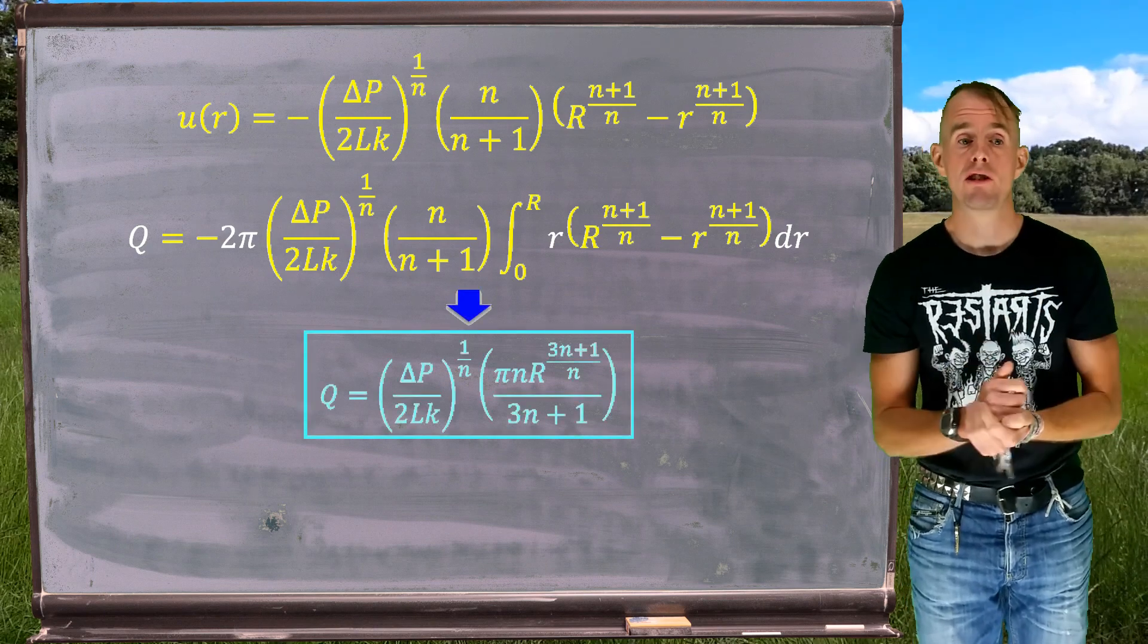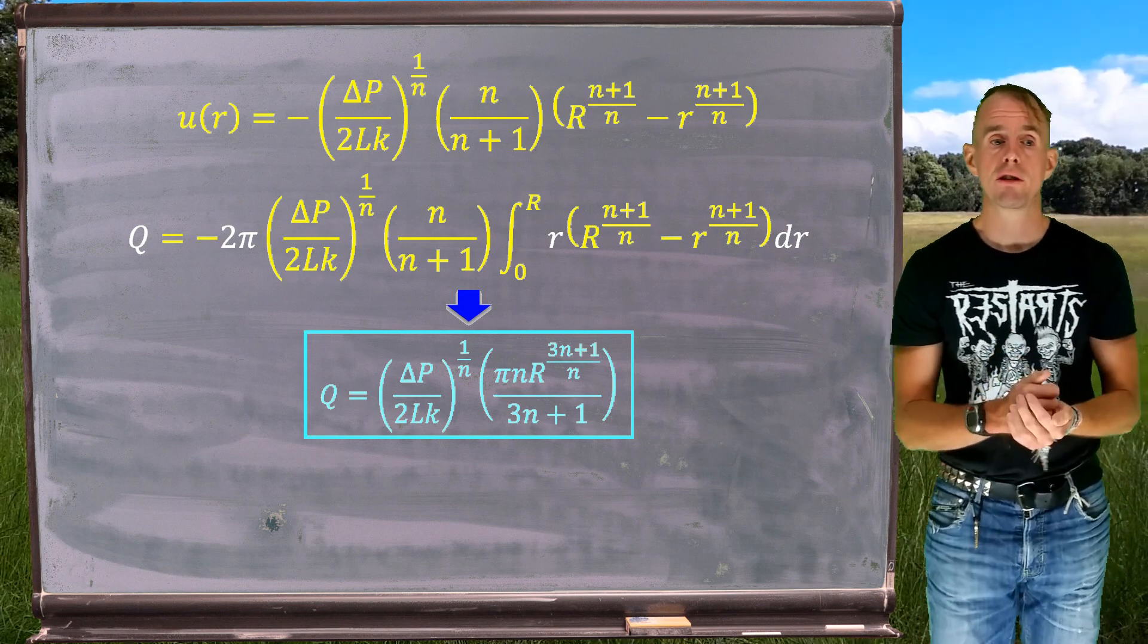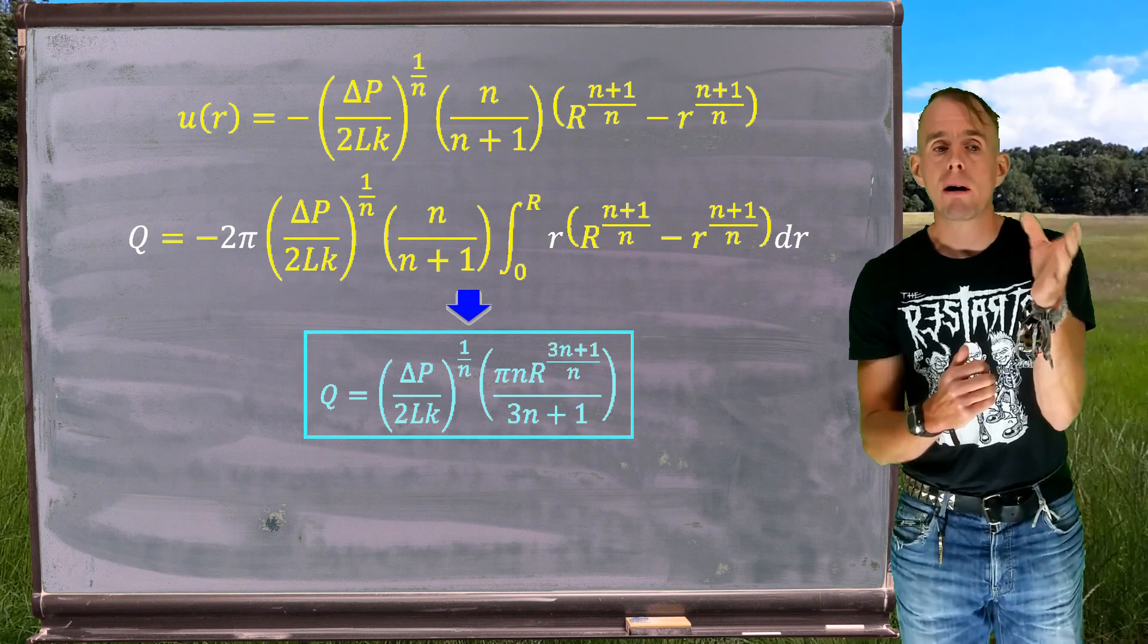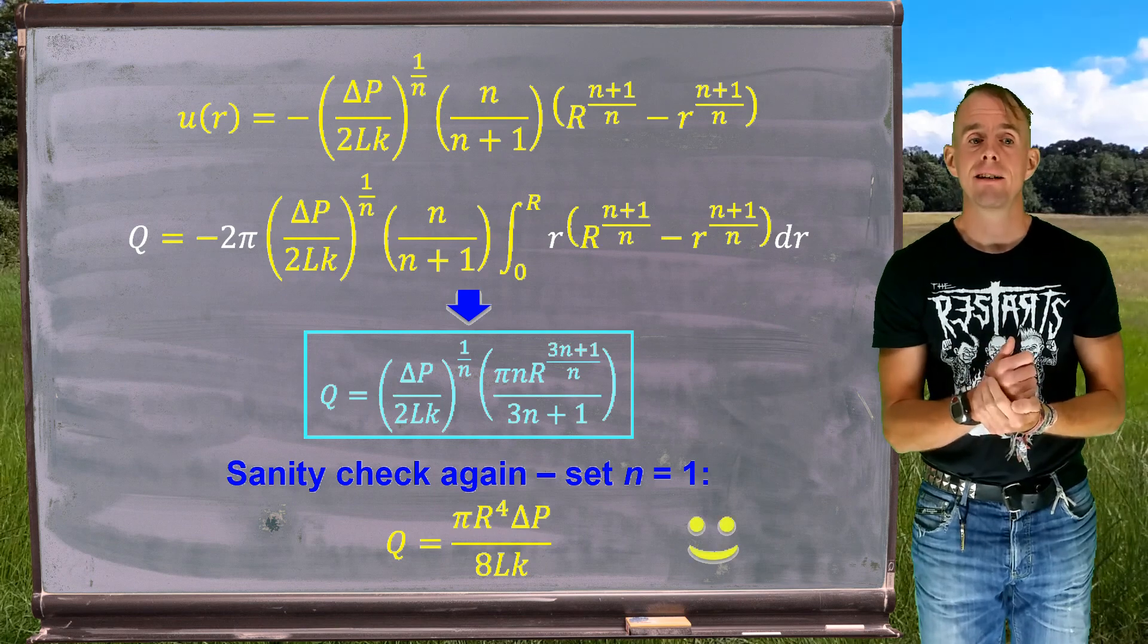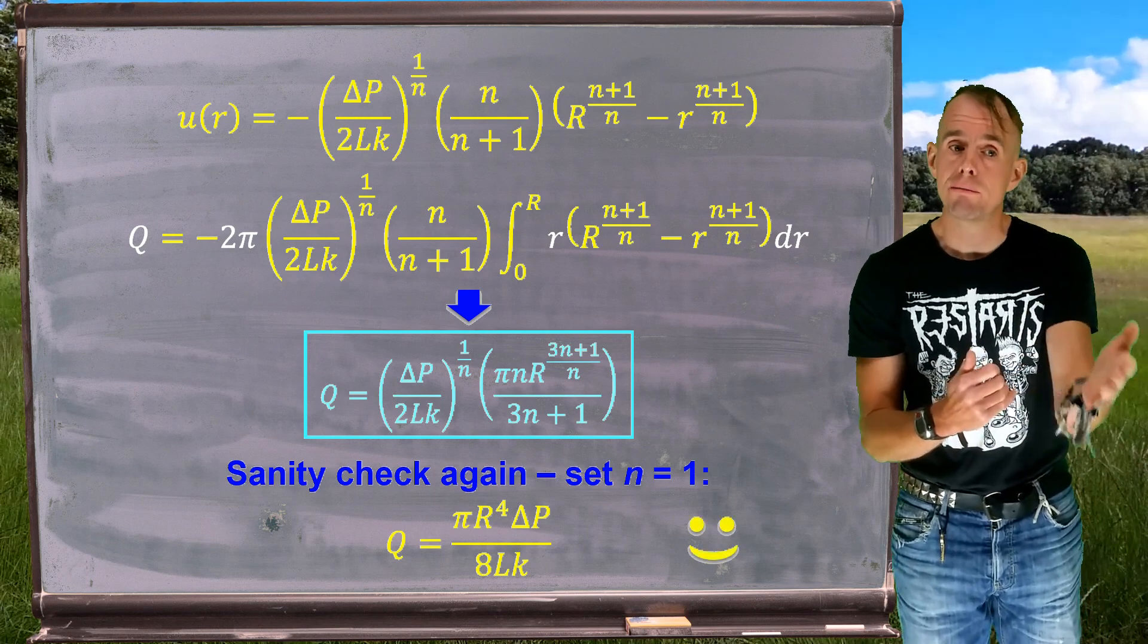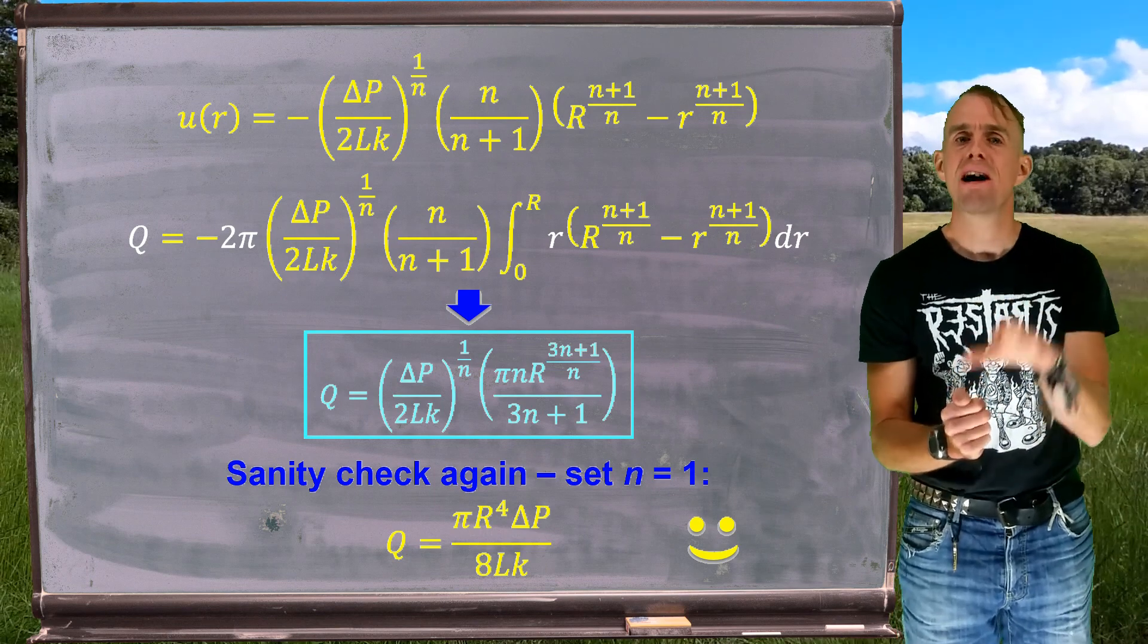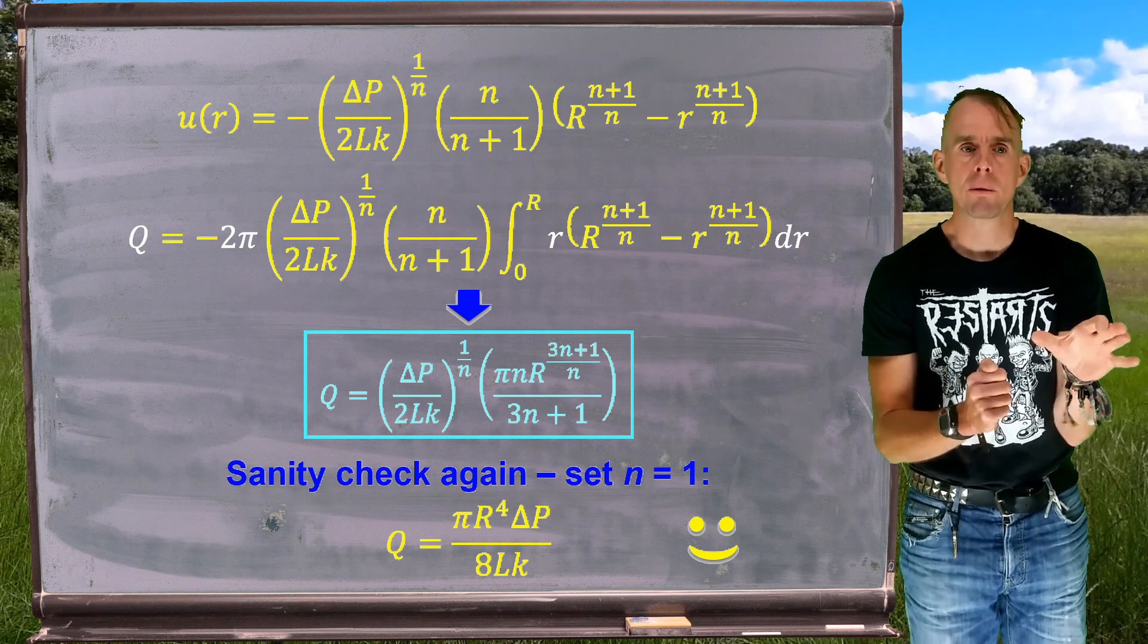Okay, again, we'll form a sanity check. So if n equals 1, we should get our Newtonian result back. And look, there we do. The Q equals pi big R to the power 4, delta p over 8 L, k in this case. But if k was equal to mu, that would be the familiar Newtonian result. So again, a good demonstration of how we can check our results against an established result that we're happy with.